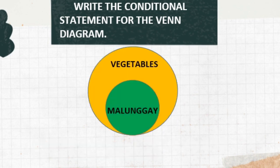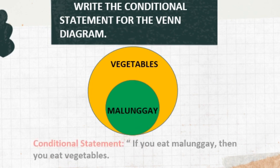Now, your turn. Write the conditional statement for the Venn diagram. In this given Venn diagram, the hypothesis is malunggay and the conclusion is vegetables. So the conditional statement: if you eat malunggay, then you eat vegetables.